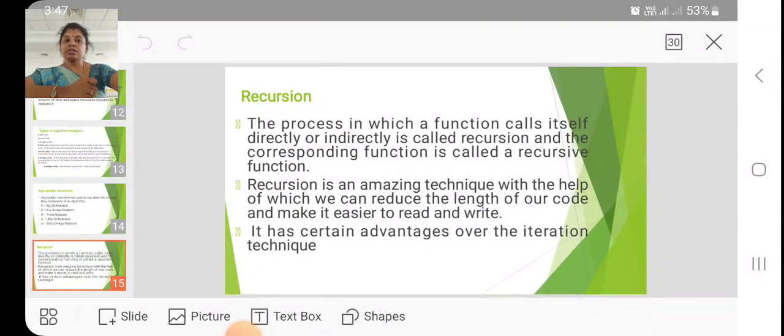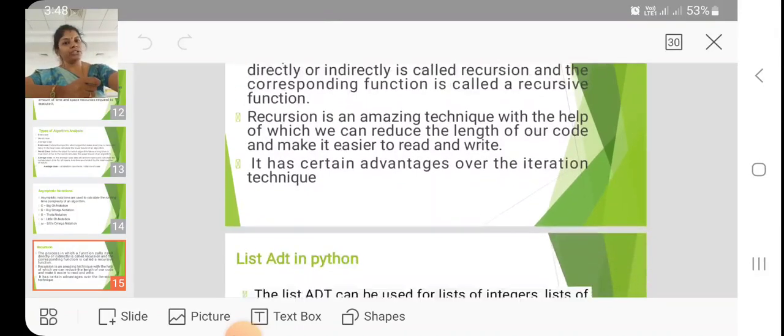Then recursion. The process in which a function calls itself directly or indirectly is called recursion and the corresponding function is called a recursive function. Recursion is an amazing technique with the help of which we can reduce the length of our code and make it easier to read and write. It has certain advantages over the iteration technique.